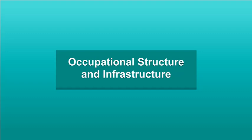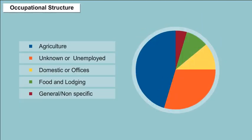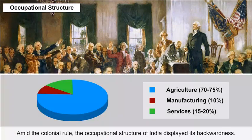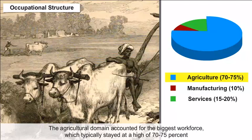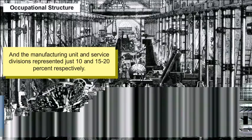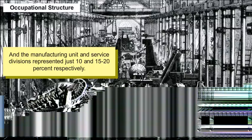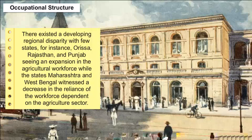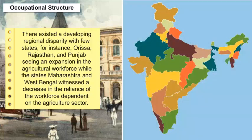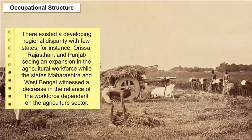Occupational Structure: During the colonial rule, the occupational structure of India displayed its backwardness. The agricultural domain accounted for the biggest workforce, typically at a high of 70 to 75%, while the manufacturing and service sectors represented just 10% and 15 to 20% respectively. There existed a growing regional disparity, with states like Orissa, Rajasthan and Punjab seeing an increase in agricultural workforce, while Maharashtra and West Bengal witnessed a decrease in dependence on the agriculture sector.